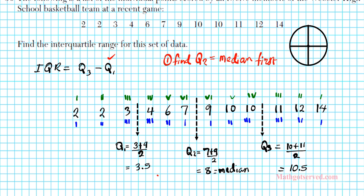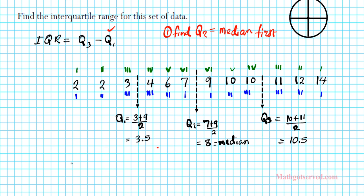We're asked to find the interquartile range. We write the formula: IQR, the interquartile range is equal to the upper quartile minus the lower quartile, Q3 minus Q1. That's going to give us 10.5 minus 3.5. Our interquartile range is 7 units.